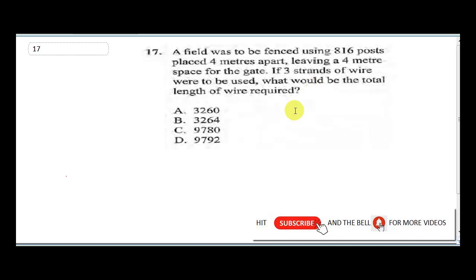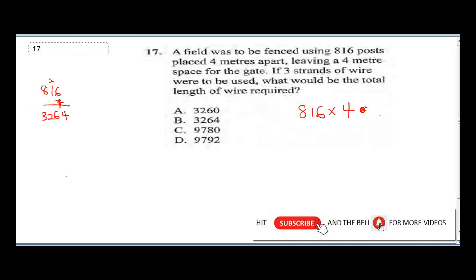The first thing I'm going to do is multiply 816 times 4. Four times 6 is 24, carry 2. Four times 1 is 4, plus 2 is 6. Four times 8 is 32. So that gives us 3264.